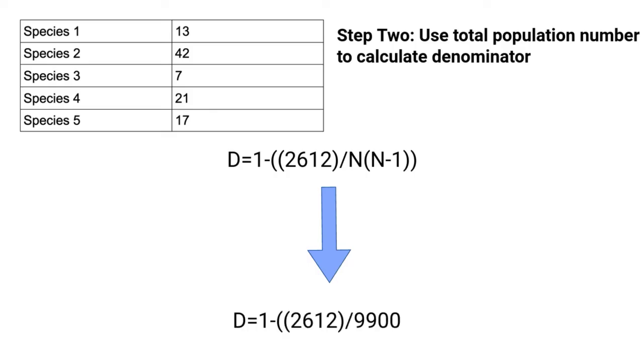Now, our denominator, using the capital N of our sample population, which is 100, should equal to 100 times 100 minus one, or 9,900.